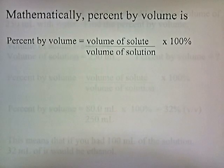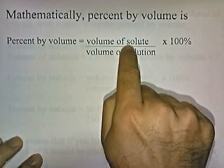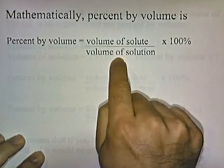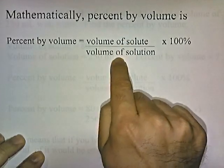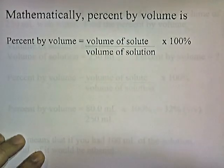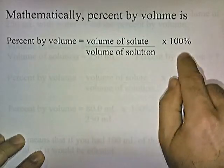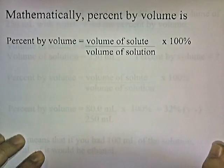Mathematically, percent by volume is the volume of the solute divided by the volume of the solution — the total volume of the solution — times 100.